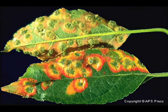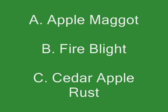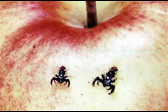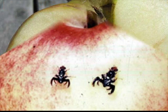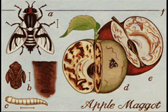Can you guess what disease this is? Also named the railroad worm because of the tracks they leave in the apple, this maggot was first discovered in the Pacific Northwest in 1979.